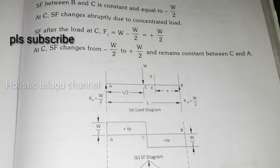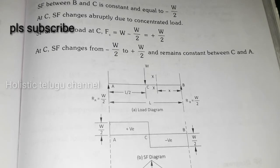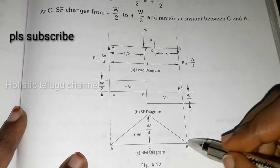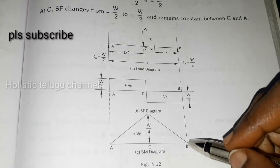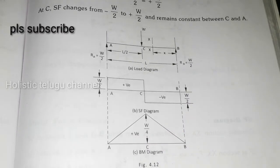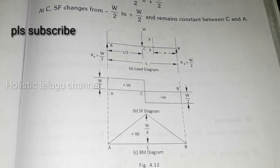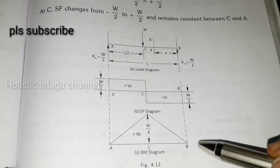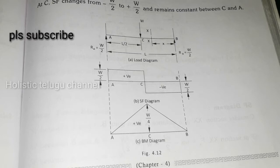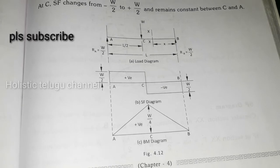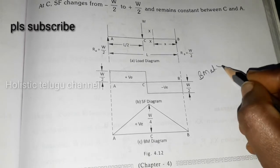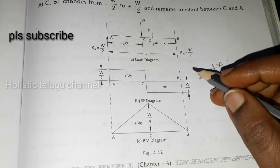So here we have the bending moment. The bending moment starts here — we have started here. At the reference point we have zero, and here we have the reference XX section. BM at X — so what is BM at X?